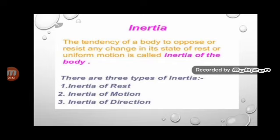An athlete runs some distance before jumping because the athlete can't suddenly change their state from rest to a moving position. So before taking a jump, she runs for some extent and then attempts to jump. The next one is inertia of motion.